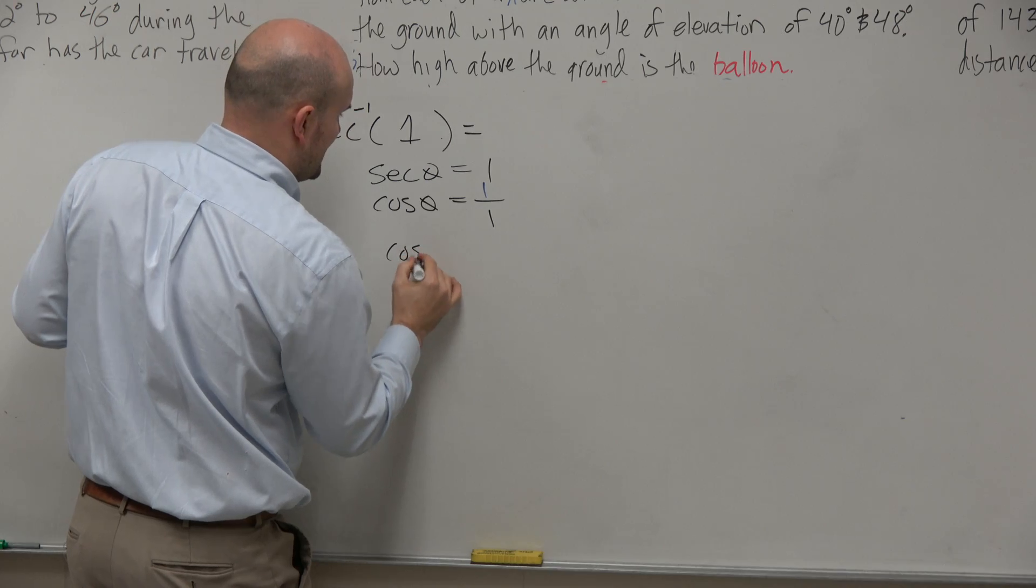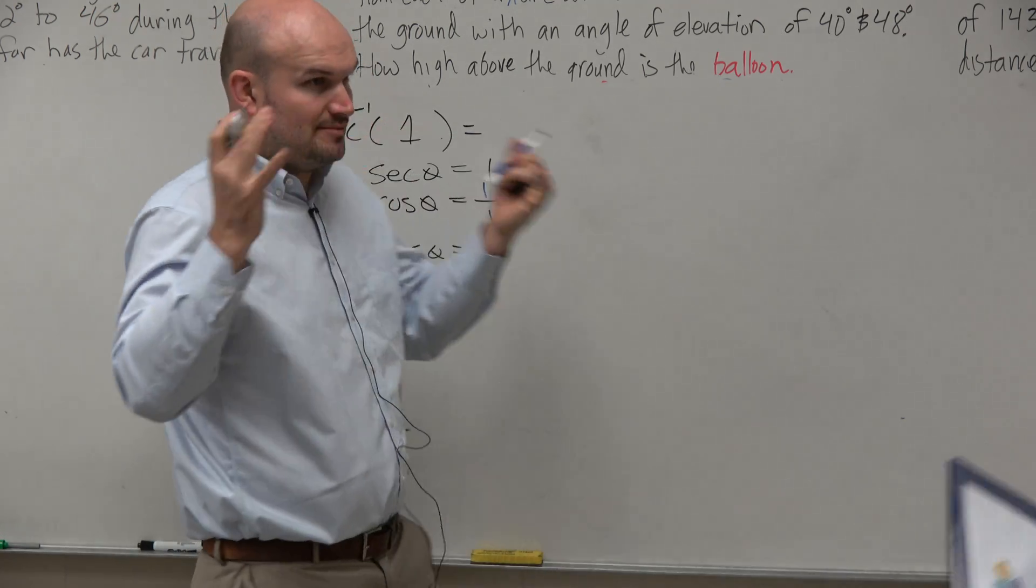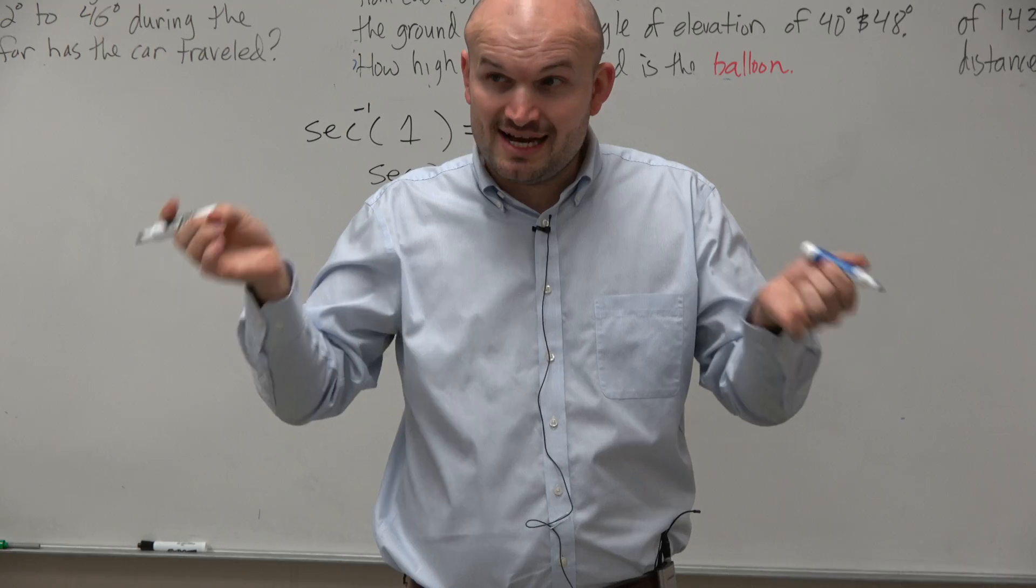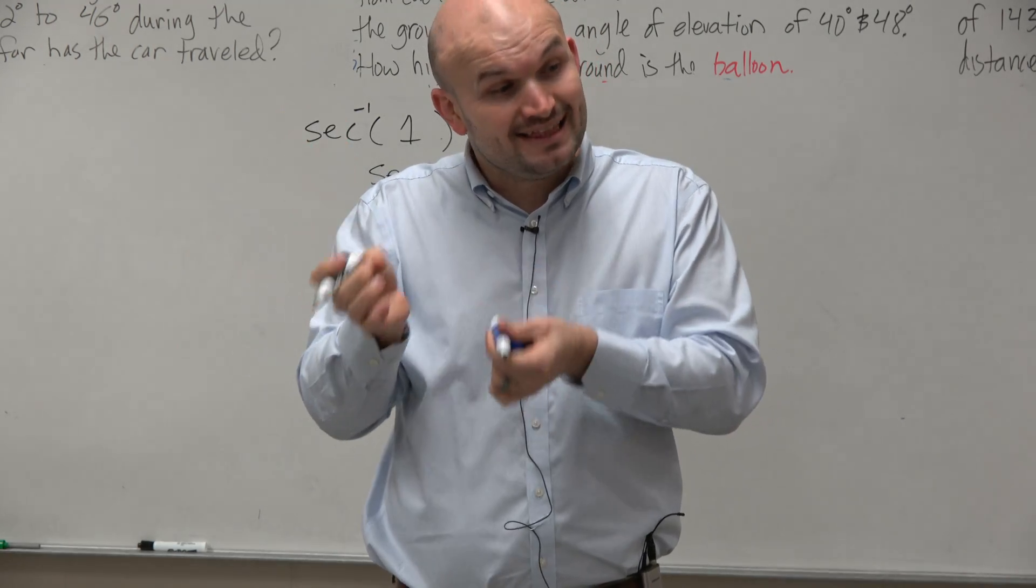which is really just cosine of theta equals 1. So then I got to look at my unit circle and say, all right, for what angle is cosine equal to 1 within the domain restrictions?